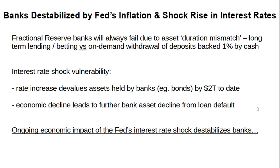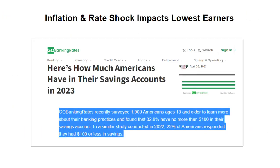We have an ongoing impact from the Fed rate shock destabilizing the banks. A rate shock and inflation harm the lowest income earners the most. A GoBankingRates survey finds that 32.9% of respondents now have no more than $100 in their bank accounts — they surveyed a thousand Americans aged 18 and older. That is 10 percent higher than the 22 percent who said they held $100 or less at the same time in 2022, meaning 12 months later there are 10 percent more people with little to no savings.